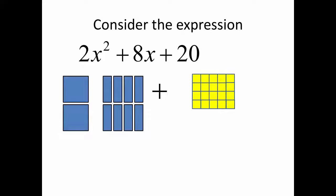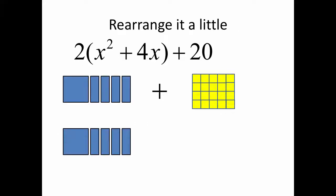We're going to consider the expression 2x squared plus 8x plus 20. You'll notice that there are two x-squareds, eight x-bars, and 20 units. What we're going to do is take the x-squareds and the x's and divide them — in this case in half — so that we have two sets of x squared plus 4x.